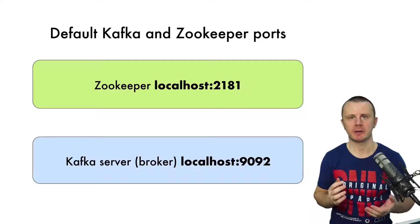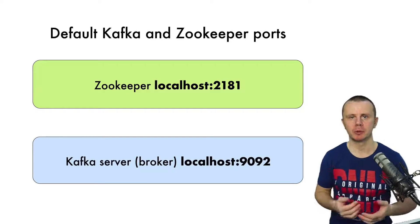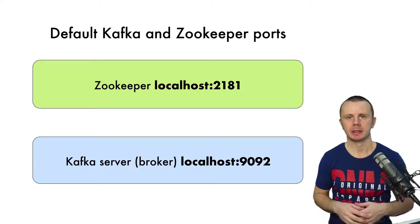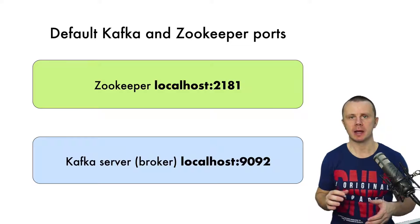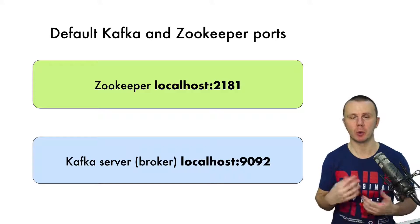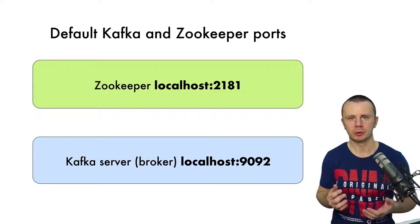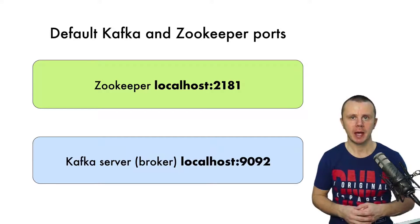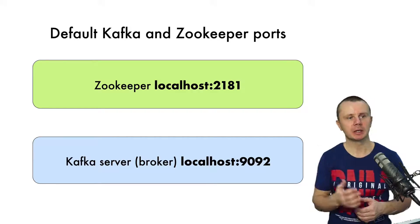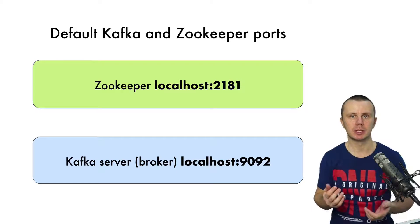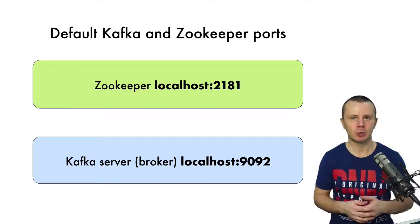When you install Kafka on any computer, it comes basically as a set of files. Those files are mostly executable scripts with extension .sh or bat scripts for Windows. There are also default configuration files for ZooKeeper and the Kafka broker. Here on this diagram, you can see the default ports that are used in those configuration files.